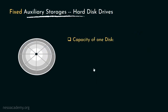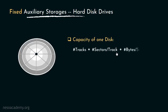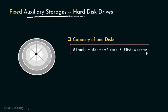In order to find out the capacity of one disk, we have to first consider the number of tracks of the disk. Multiplying that by the number of sectors in each track gives us the total number of sectors on that particular disk. Finally, multiplying the number of bytes stored by each sector with the total number of sectors, we acquire the capacity of each disk.